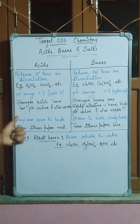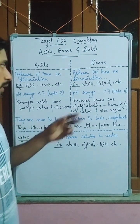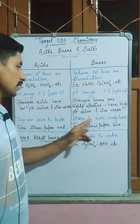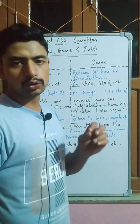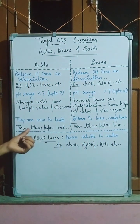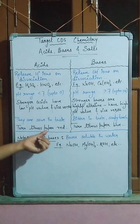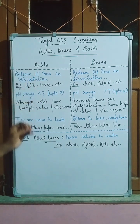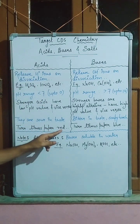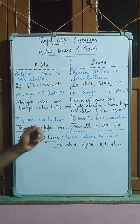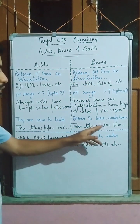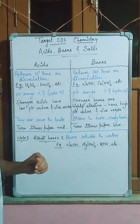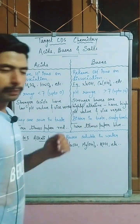If we talk about taste, acids are sour in taste. Bases are bitter in taste and have a soapy touch. When it comes to litmus paper, acids will turn litmus paper red, while bases will turn litmus paper blue.